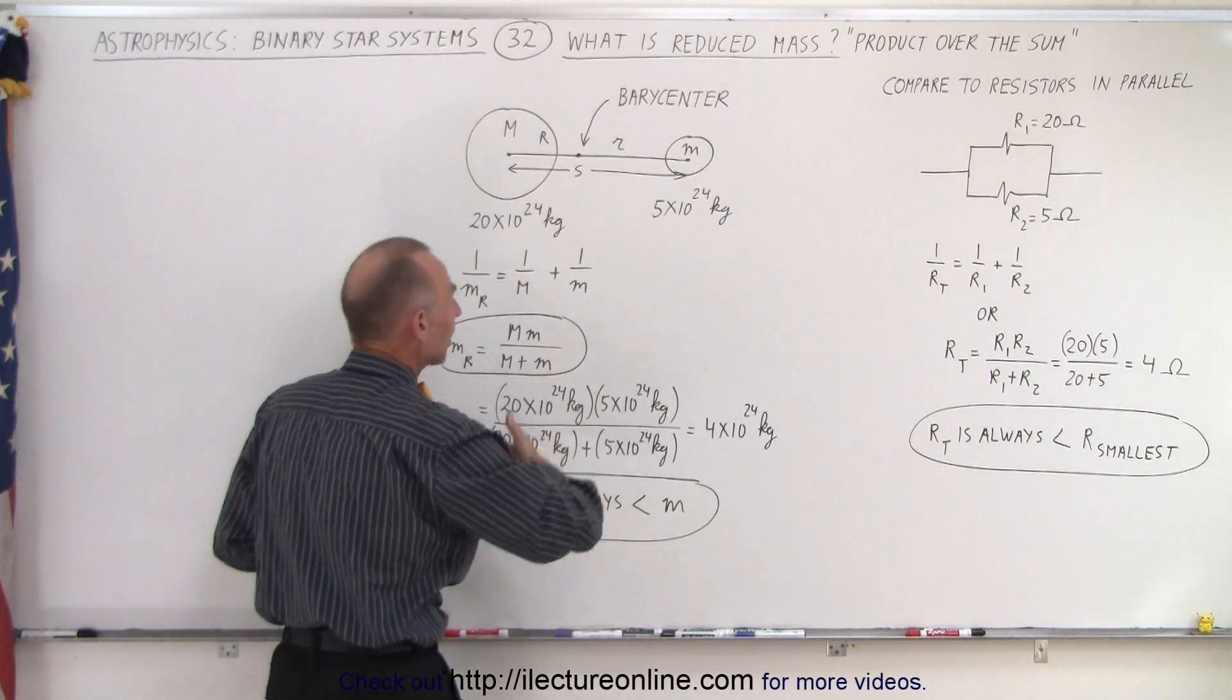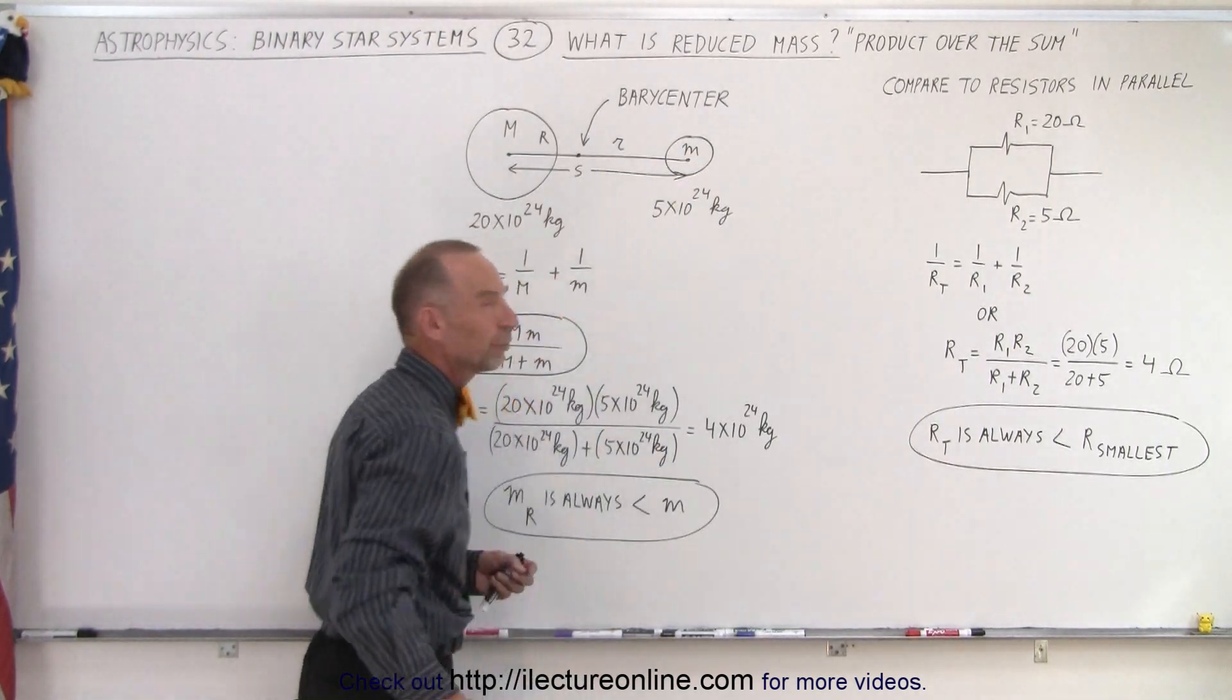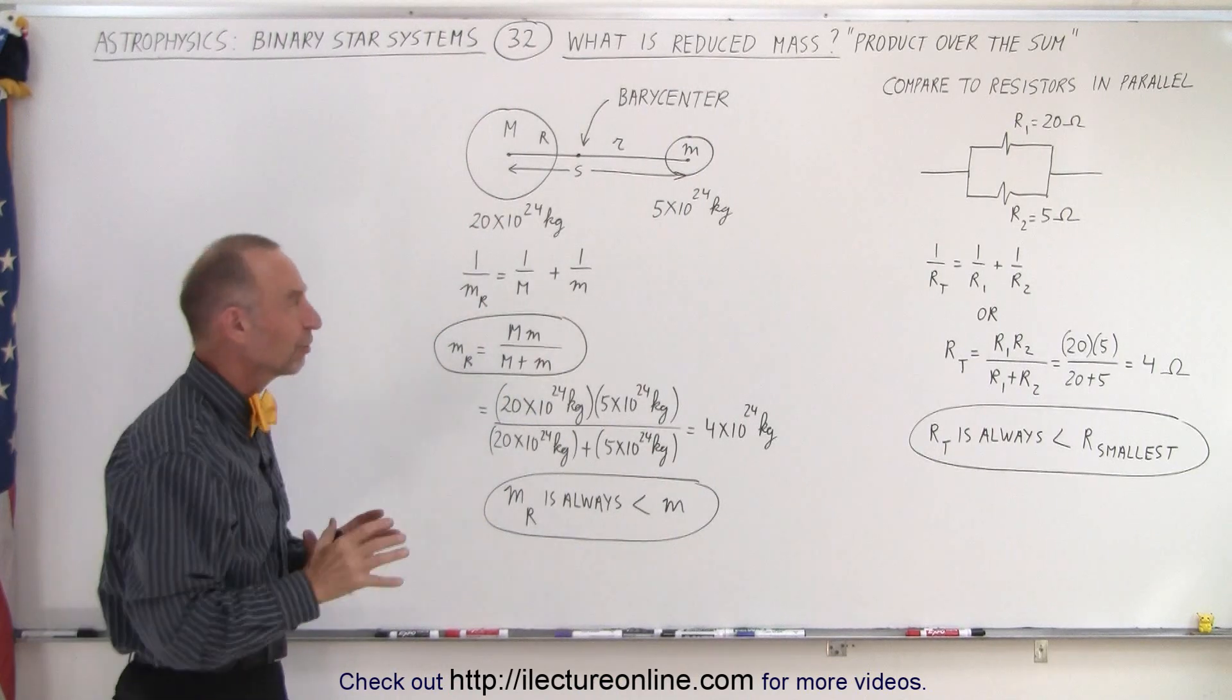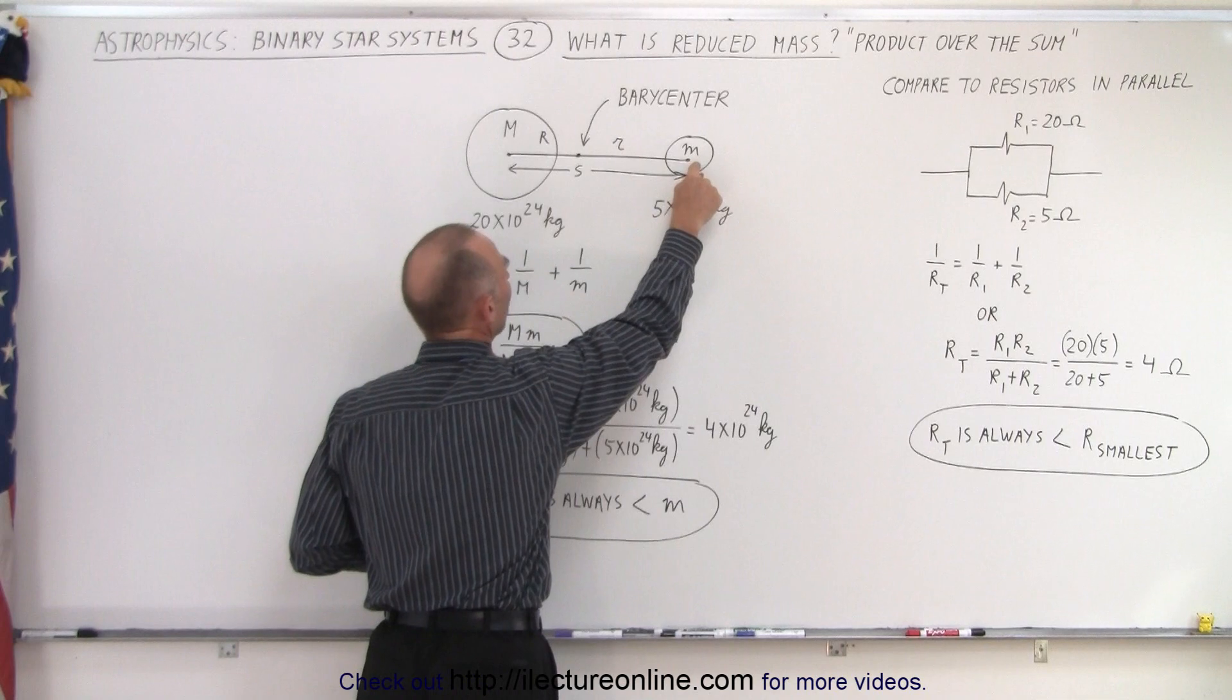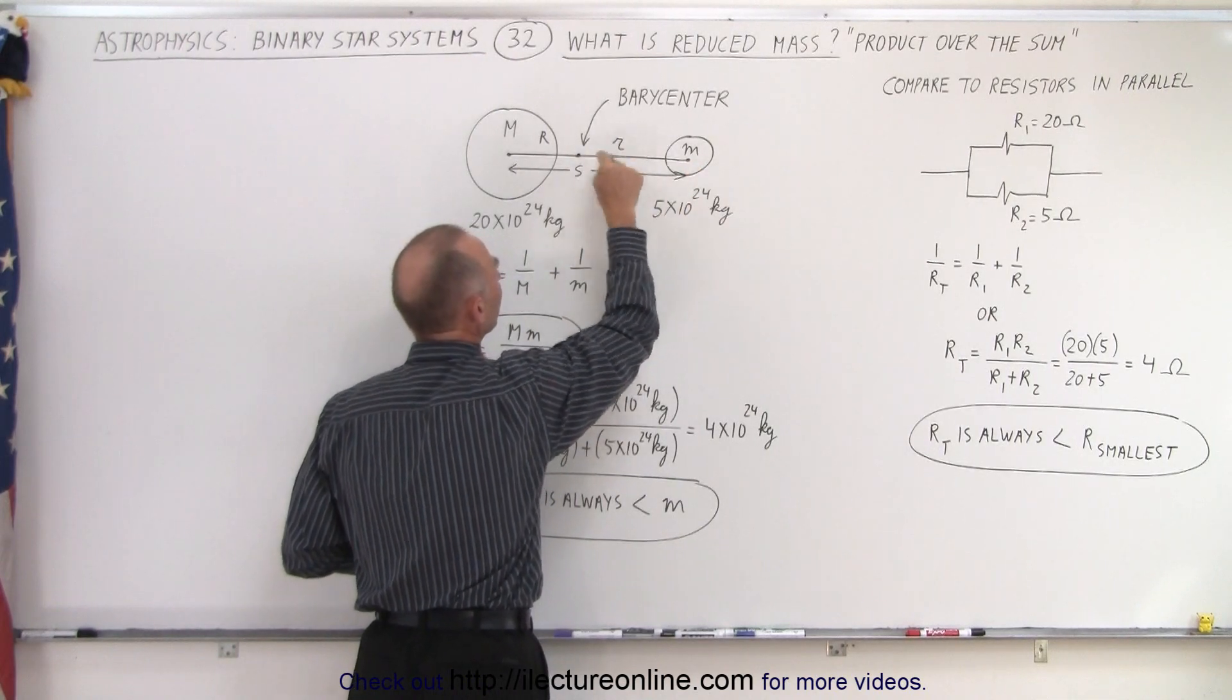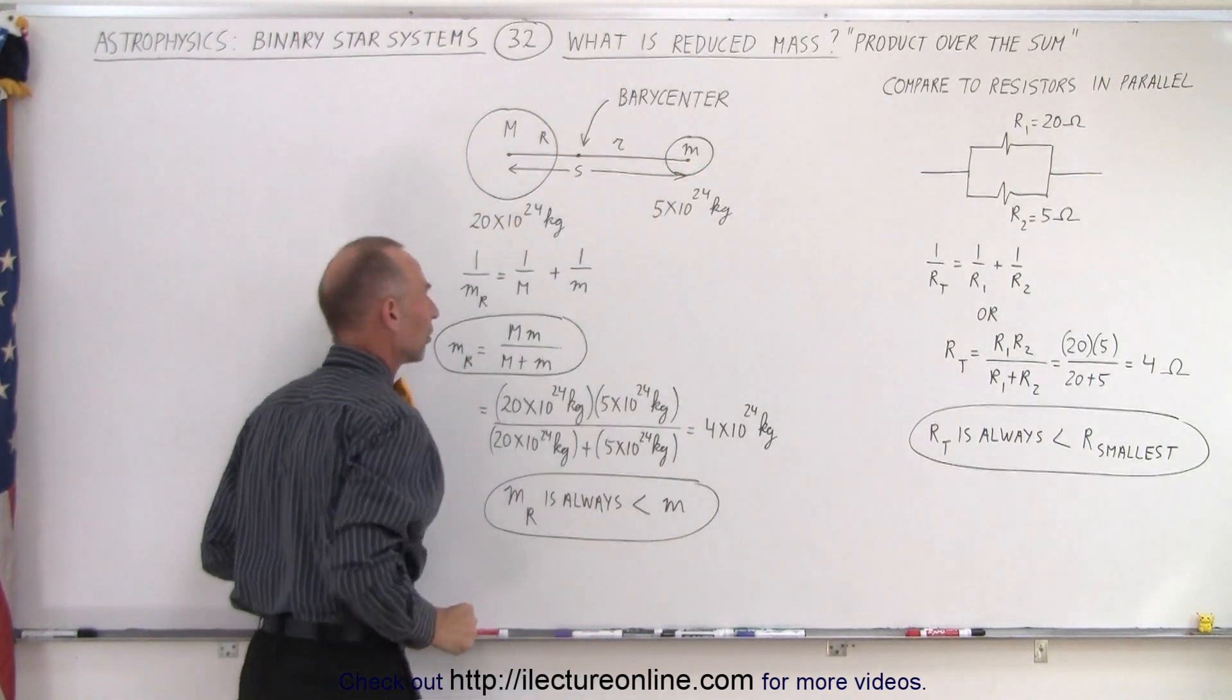That's why we call it the reduced mass and the reduced mass is always assigned to the smaller of the two objects to make the equations of motion and F equals MA come out correctly under the circumstance that the small mass revolves around the barycenter and not around the center mass of the large mass.